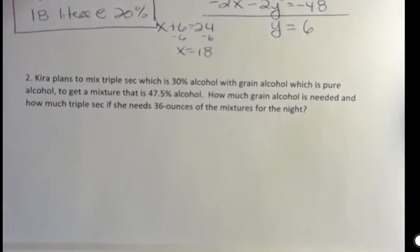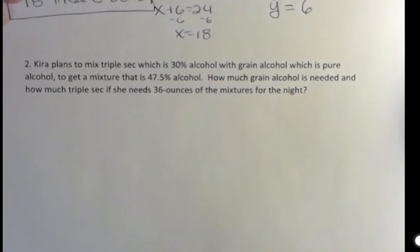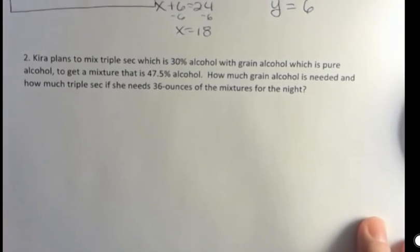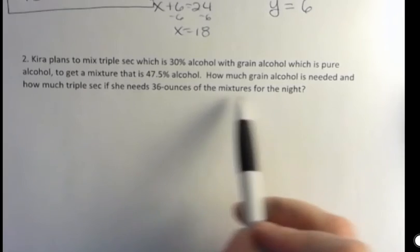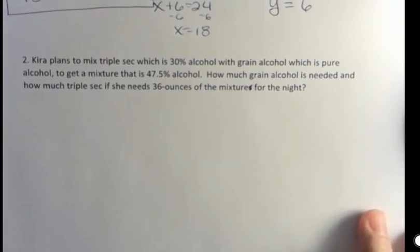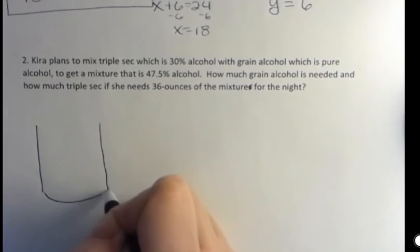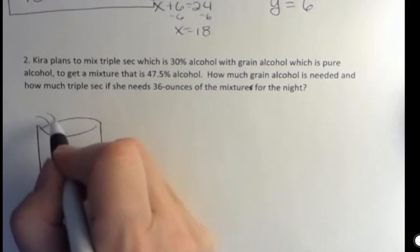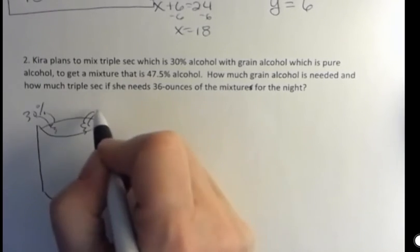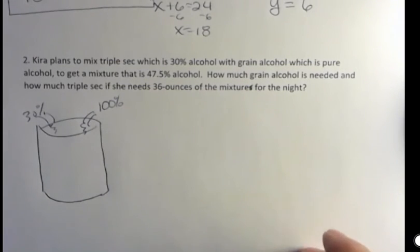Second one. Kira plans to mix triple sec which is 30% alcohol with grain alcohol which is pure alcohol to get a mixture that is 47.5% alcohol. How much grain alcohol is needed and how much triple sec if she needs 36 ounces of the mixture for the night? So same thing we did before. She's going to make a concoction where she puts in triple sec, triple sec being 30% alcohol, and she adds grain alcohol, which is 100% alcohol. And she needs to get 36 ounces altogether.